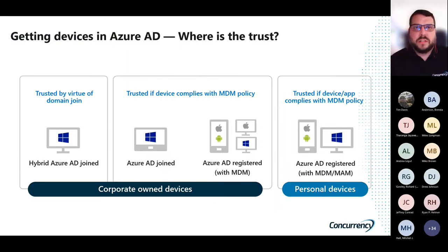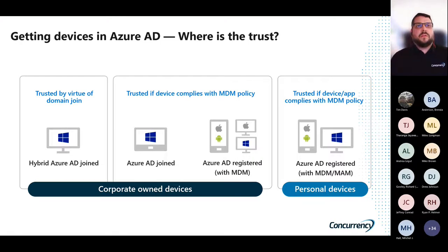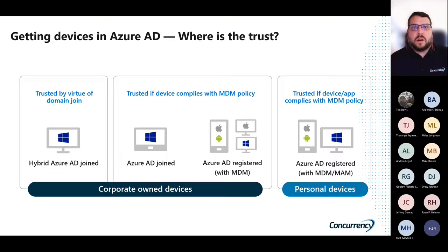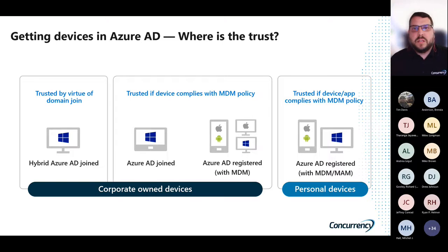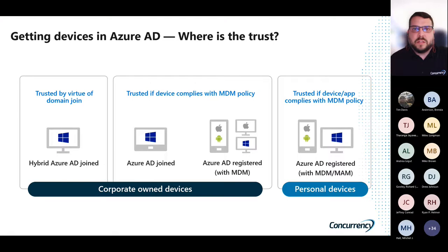So where is that trust for the devices? Hybrid Azure AD Join is trusted because it's domain joined. For other corporate devices, when they're Azure AD joined, their trust becomes whether the device is compliant with our MDM policies. And then BYOD devices — we won't talk much about that today — but they're also trusted if they comply with that MDM policy.